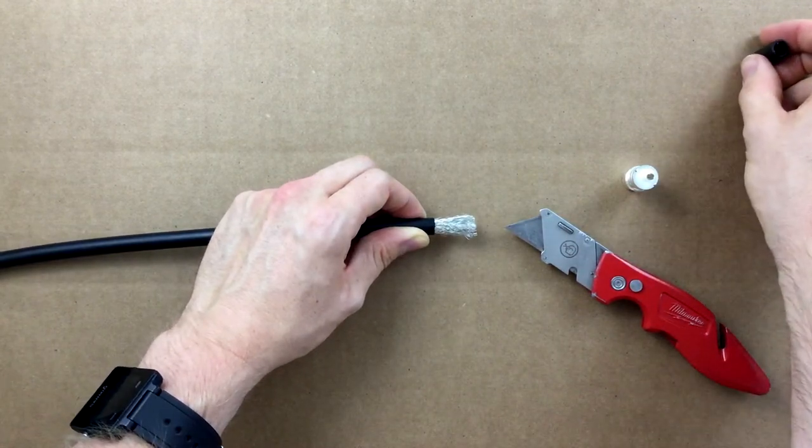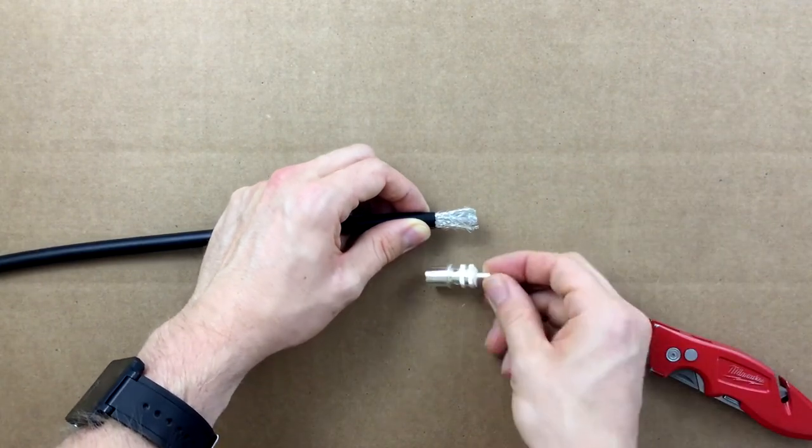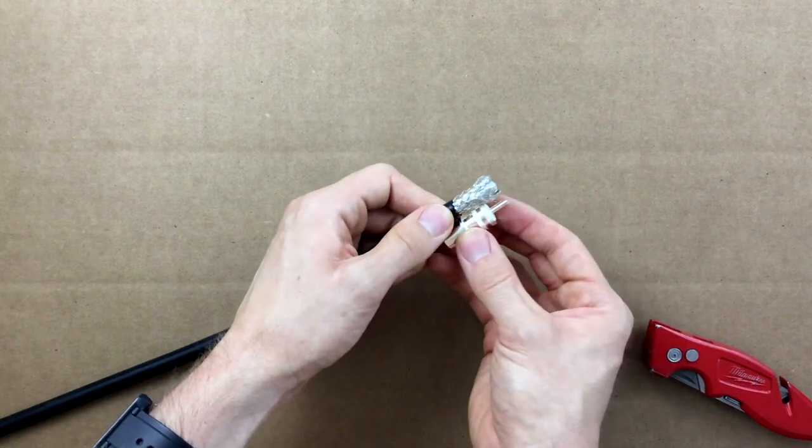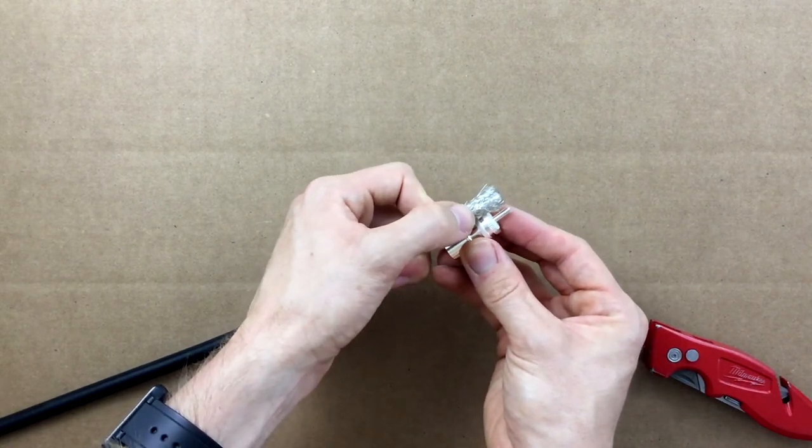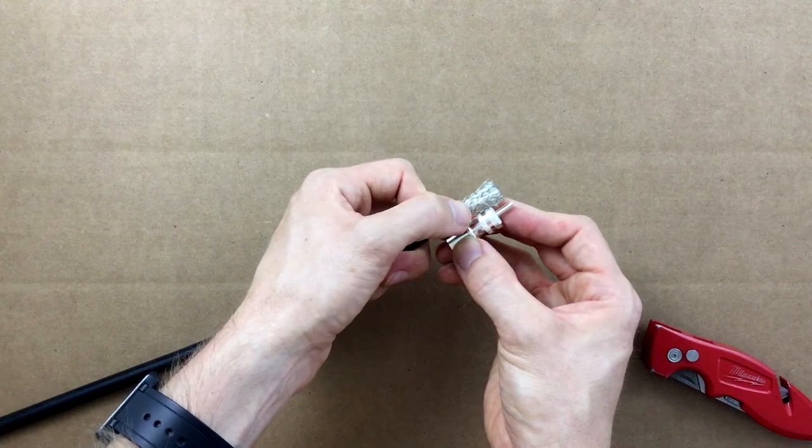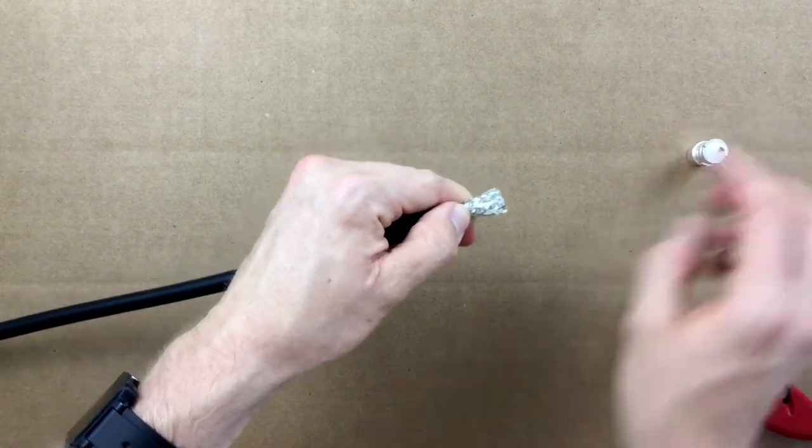Grab the PL259 body again and line up the center pin with the end of the coax. Place a mark or use your thumbnail to mark just below the second knurled ring of the PL259 to show where to cut through the braid and dielectric.